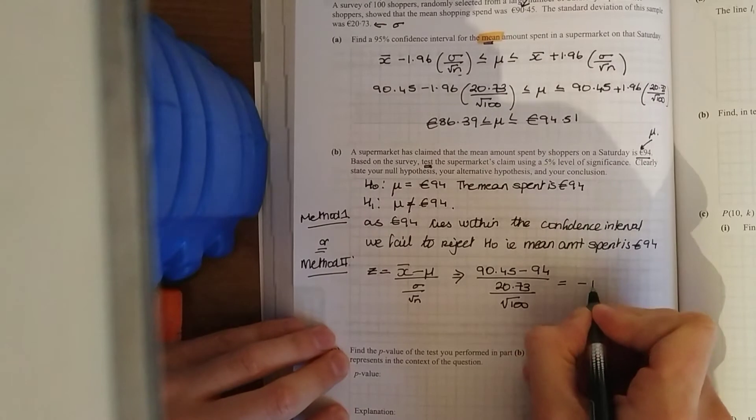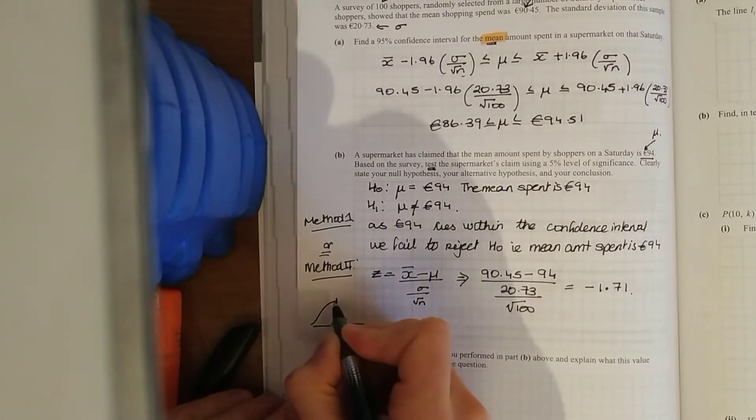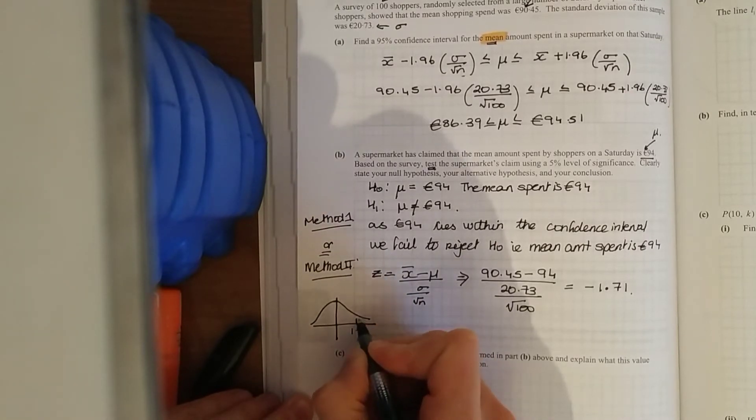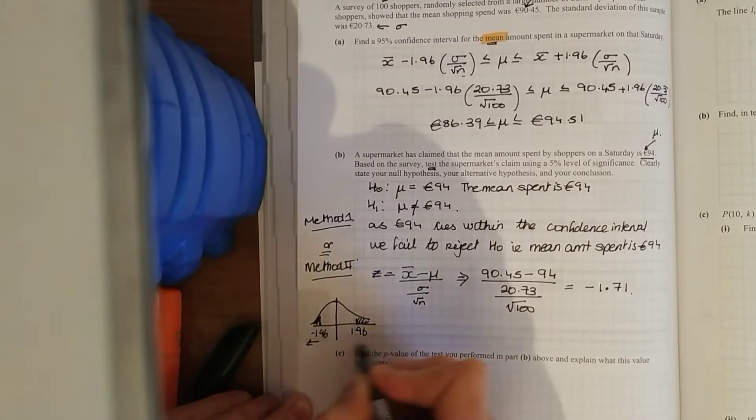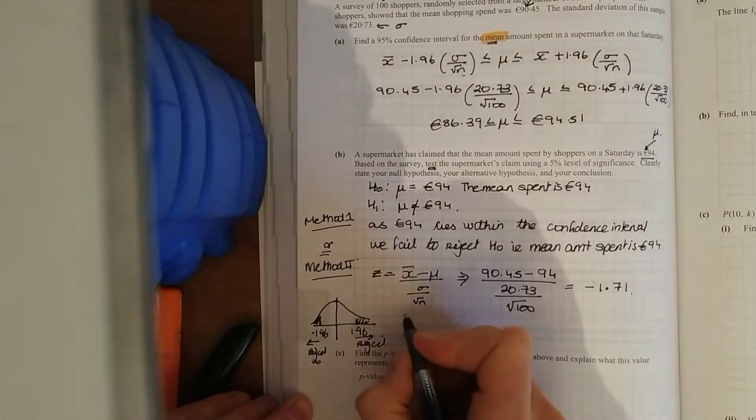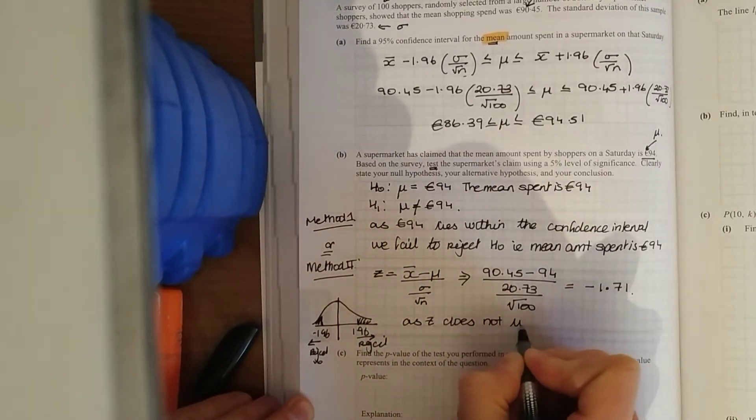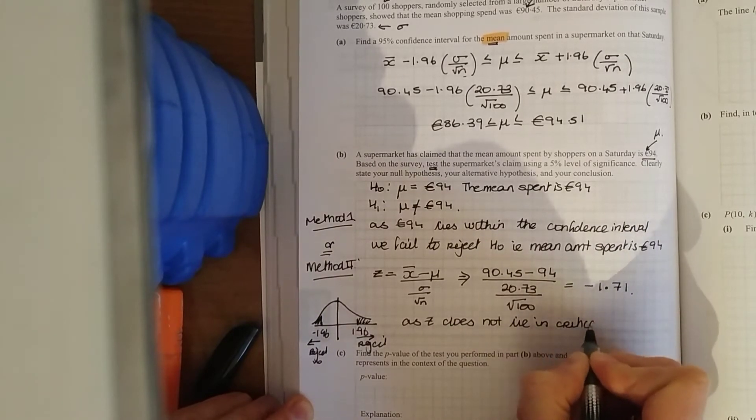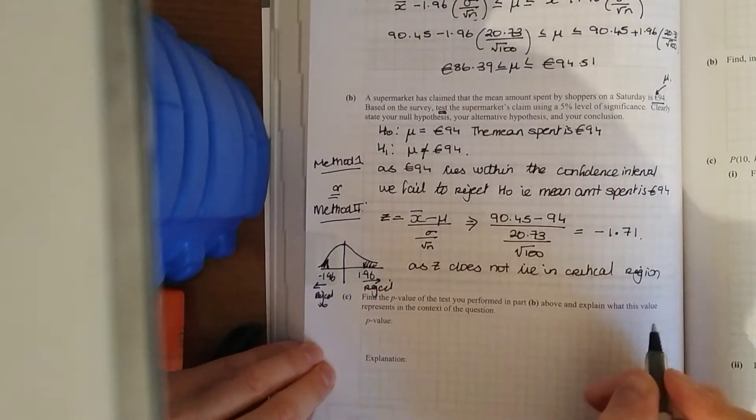And you get minus 1.71. So there's two critical regions here, 1.96, think of your 95%, and minus 1.96. If we lie in those critical regions, we reject the null hypothesis. Does minus 1.71 lie within that? No. So we fail to reject. It's backed up there. So z does not lie in critical region. We fail to reject. We fail to reject that null hypothesis.